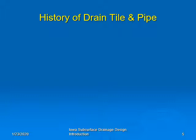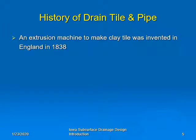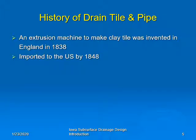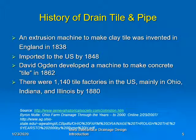Let's take a look at the history of subsurface drainage. An extrusion machine was invented in England in 1838 to make clay tile. This machine was imported into the United States by 1848, and in 1862 David Ogden developed a machine to make concrete tile. By 1880 there were over a thousand tile factories in the United States, mainly in Ohio, Indiana, and Illinois.